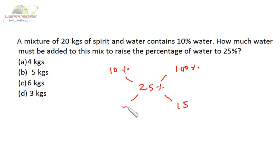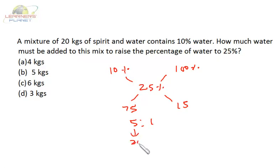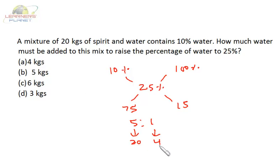The difference gives us 15 and 75, so the ratio is 5 is to 1. This 5-part portion is the 10% mixture containing 20 kilograms. That means this 5 corresponds to 20 kilograms, so 1 part equals 4 kilograms. For every 5 parts of the spirit mixture, one part of pure water should be added. That means for 20 kilograms, we need to add 4 kilograms of water.